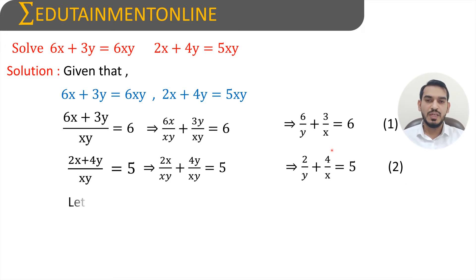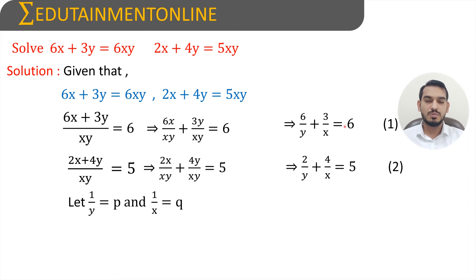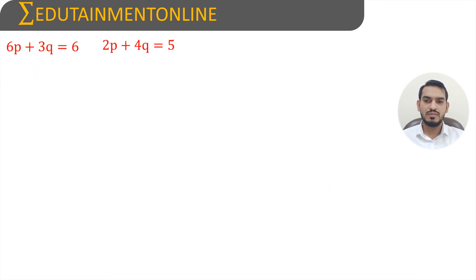To convert this into linear form, let 1/y equals p and 1/x equals q. Substituting these values in equations 1 and 2, we get 6p plus 3q equals 6 and 2p plus 4q equals 5.